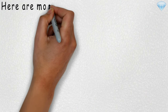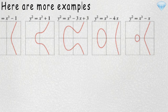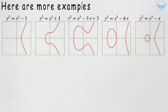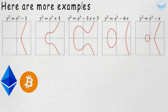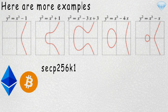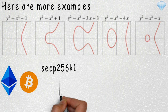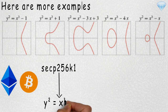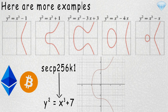Here are some examples of elliptic curves. Notice all elliptic curves are symmetrical about the X axis. The elliptic curve used by Bitcoin, Ethereum, and many other cryptocurrencies is called SECP256K1. The equation for the SECP256K1 curve is Y squared equals X cubed plus 7. This curve looks like this.